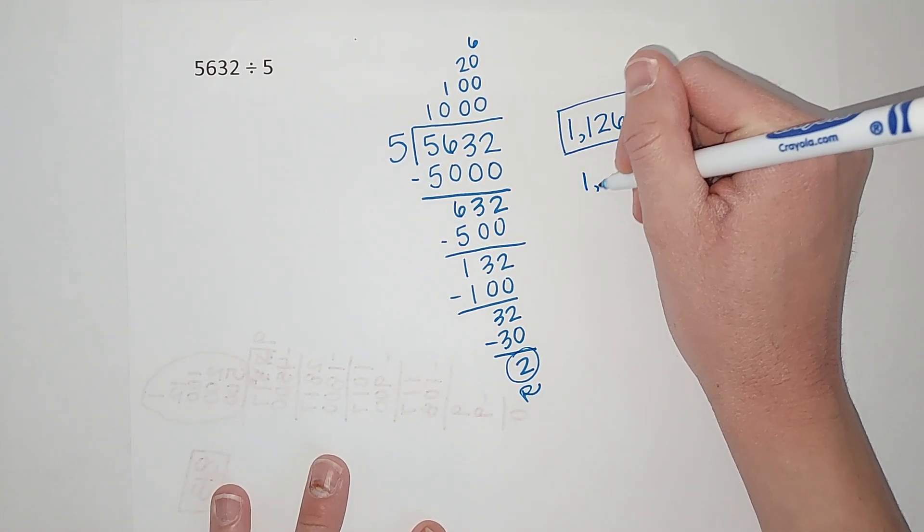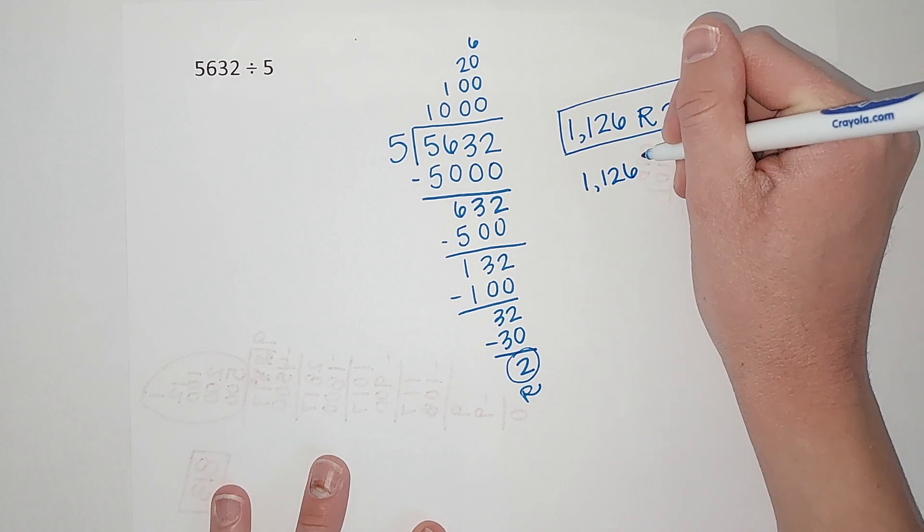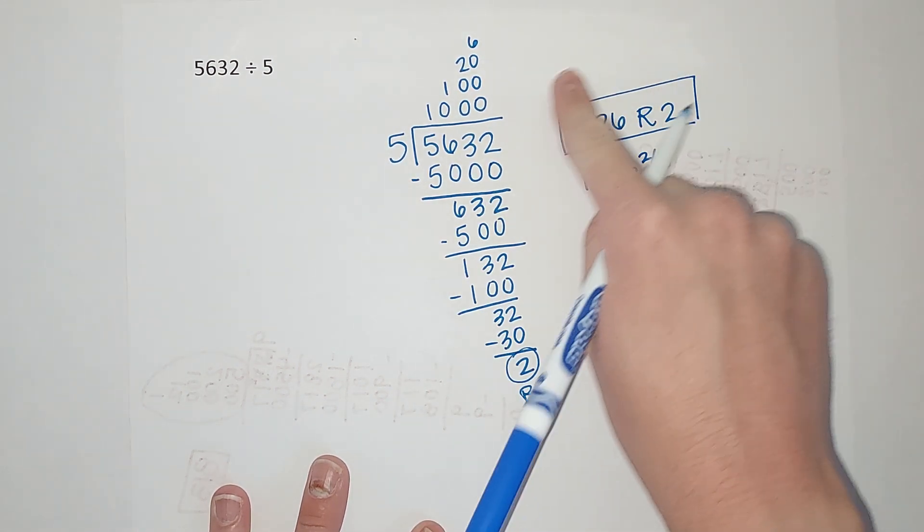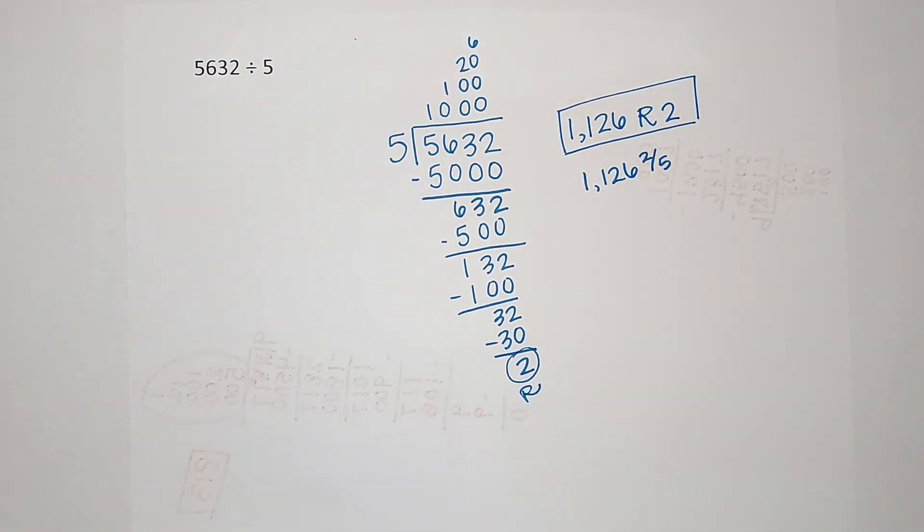All right, you could also write that as 1,126 and two-fifths because of this 5 here, but I'm guessing they'll probably want it this way for now at least. Now why is this way cool? Because guess what, we could have different kids could have different numbers up here, and as long as it adds to this you're great.